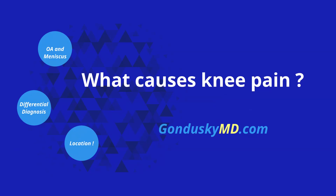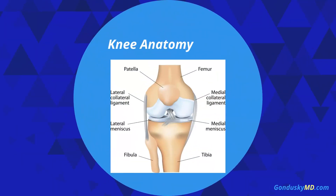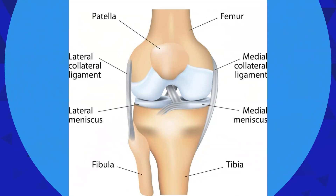In order to understand what can cause knee pain, you really need to know a little bit about anatomy. Here's a picture of the knee from the front. There are three bones that make up the knee joint: the femur on top, the tibia on the bottom, and the kneecap in the front. Like in all joints, there's cartilage on the ends of the bones — on the end of the femur, on the top of the tibia, and on the back of the patella, which is the kneecap. That articulation is the knee joint itself.